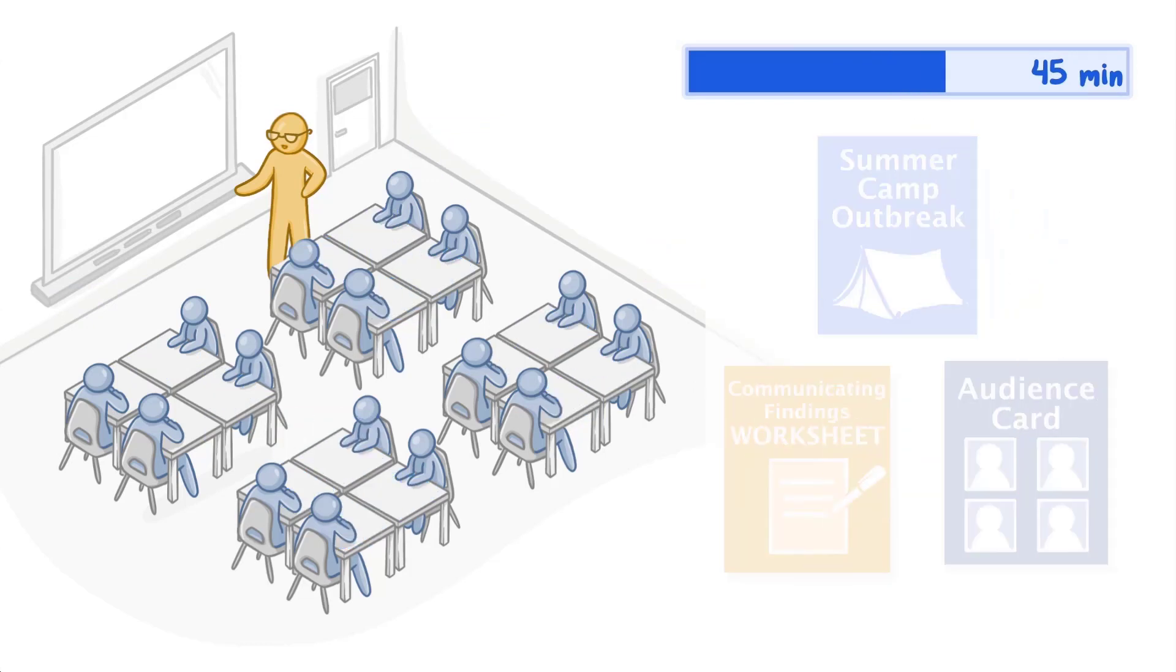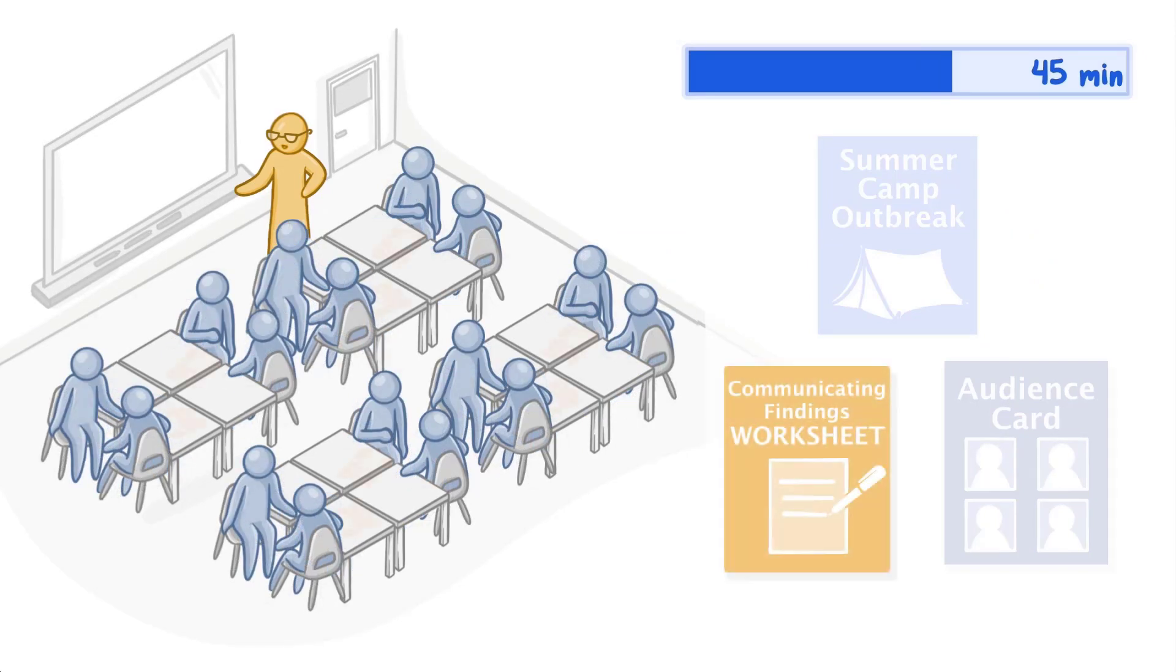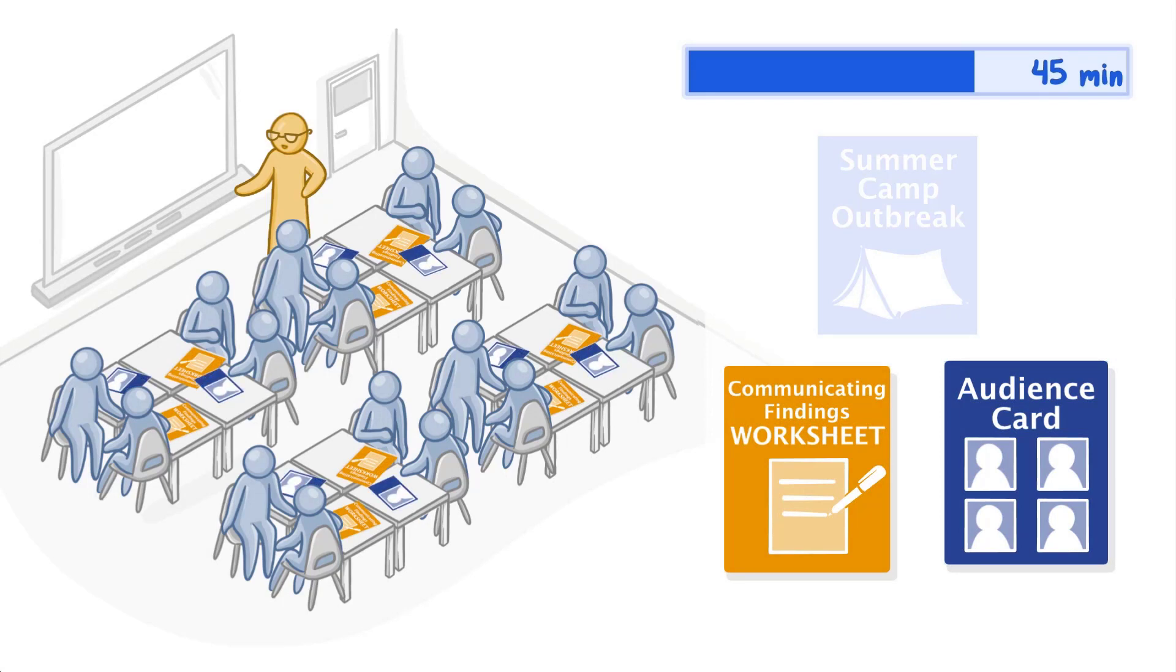In the second part of the activity, break students into eight groups. Hand each group a communicating findings worksheet and have them choose an audience card. Give groups time to develop an appropriate communication strategy and materials for their specific audience.